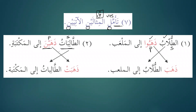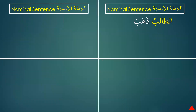Subject and predicate are equal in number and gender. But when we talk about the verbal sentence, it either starts with dhahaba or dhahabat. Dhahaba is from form number one and dhahabat is from form number four. If the doer is masculine, the sentence starts with dhahaba; if the doer is feminine, it starts with dhahabat.